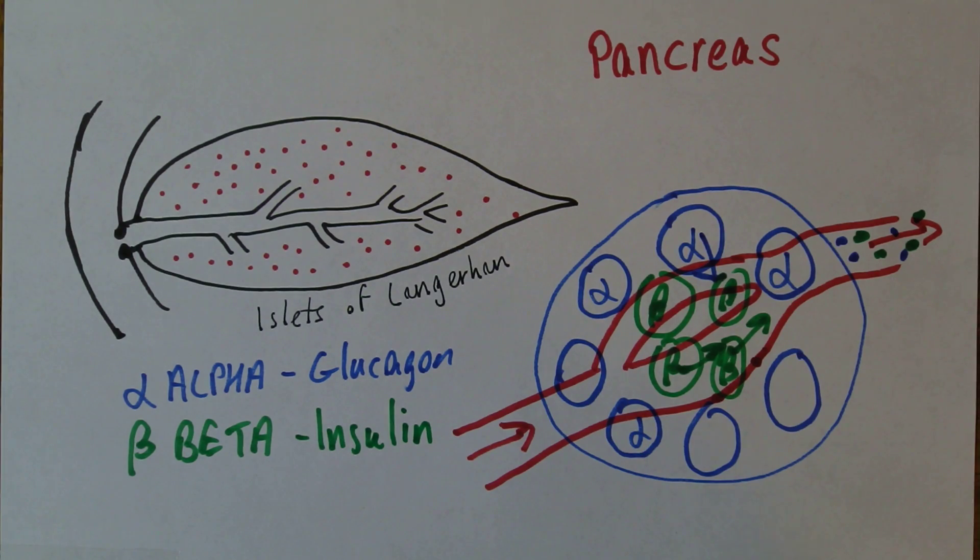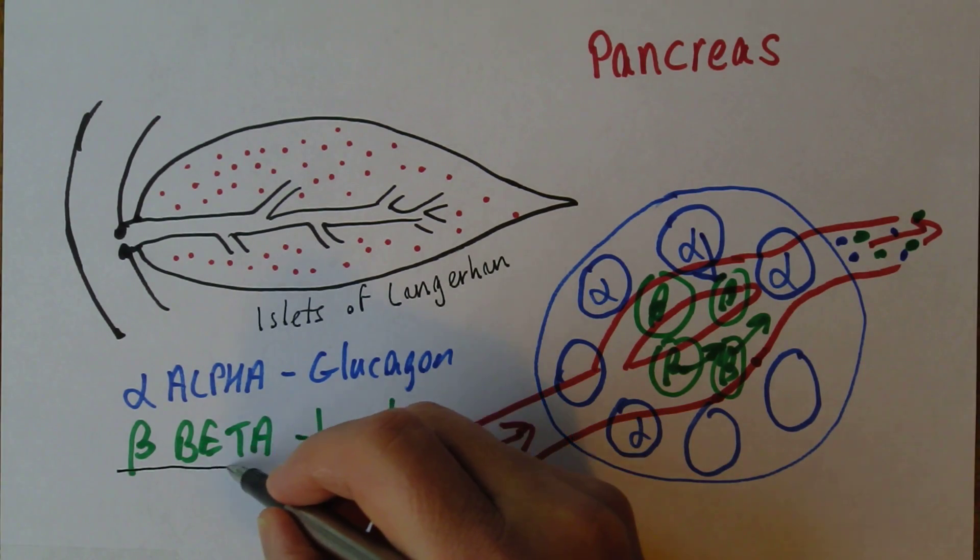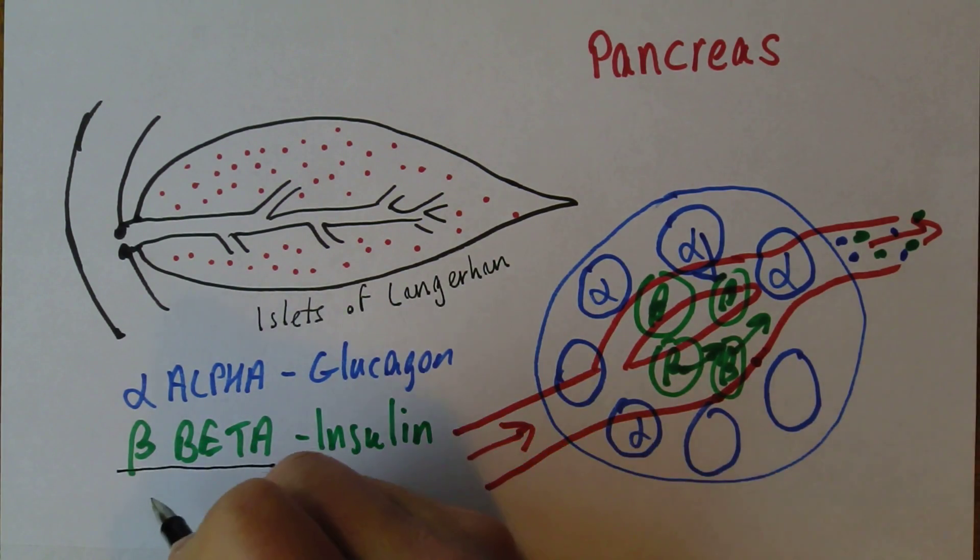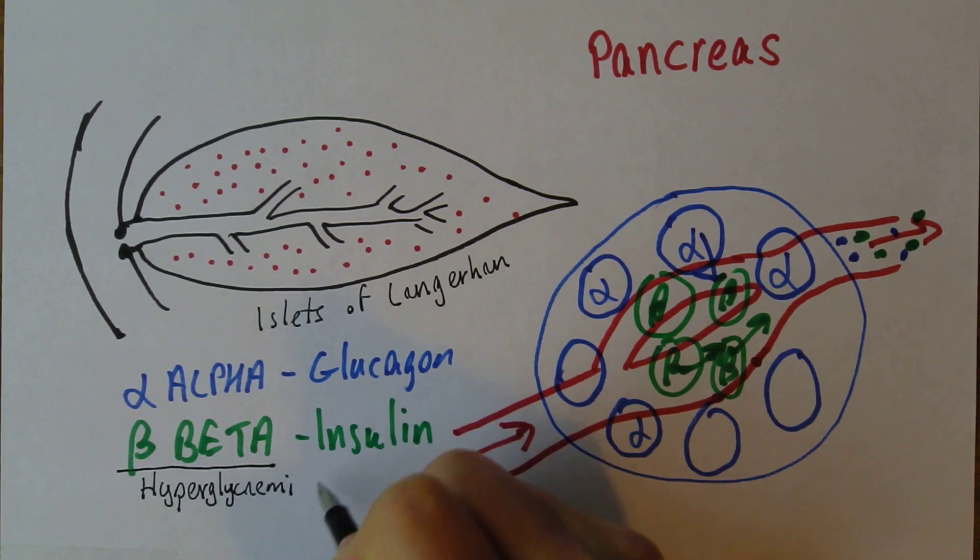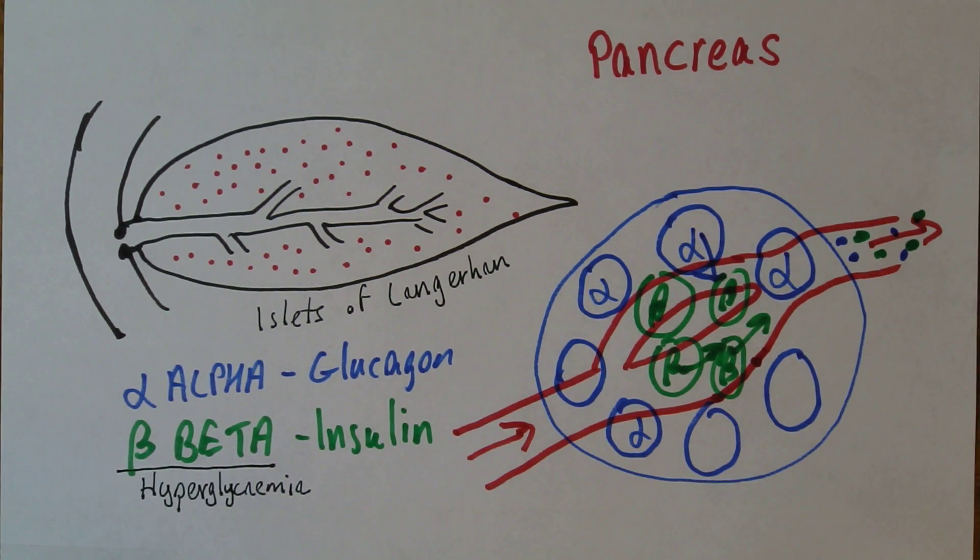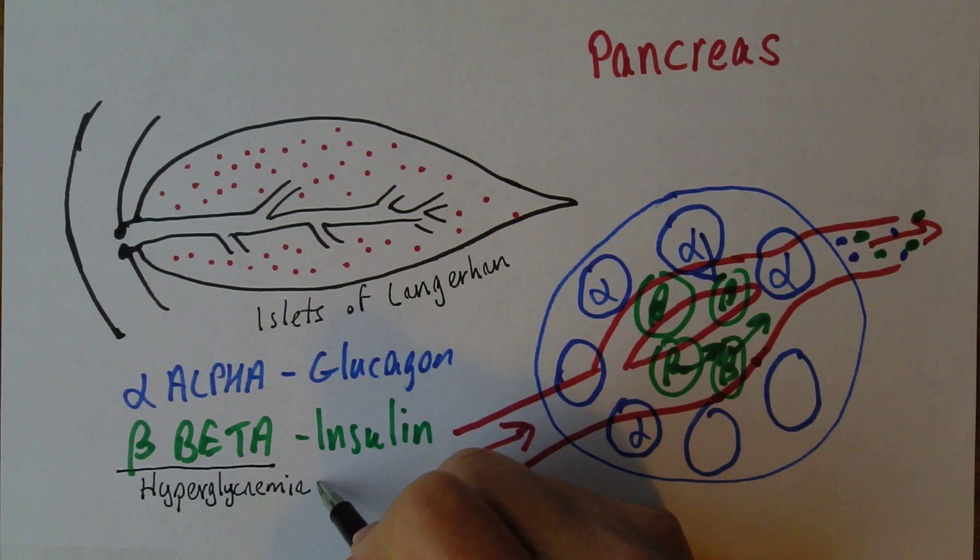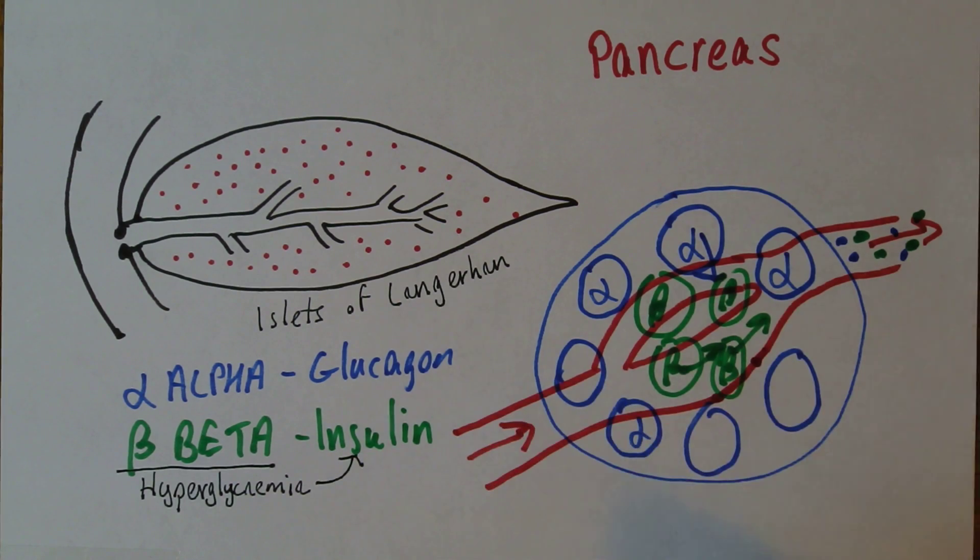Now what happens here is when the blood sugar levels rise, that's detected by the beta cells. So the beta cells are hyperglycemia detectors. When the rise in blood sugar level is detected, they produce insulin, and insulin is the endocrine hormone that will lower blood sugar levels.